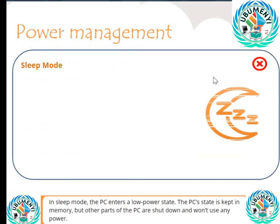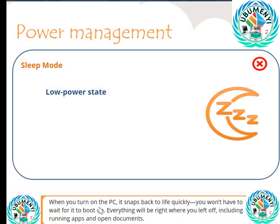Sleep mode: In sleep mode, the PC enters a low power state. The PC's state is kept in memory, but other parts of the PC are shut down and won't use any power. When you turn on the PC, it snaps back to life quickly — you won't have to wait for it to boot up. Everything will be right where you left off, including running apps and open documents.